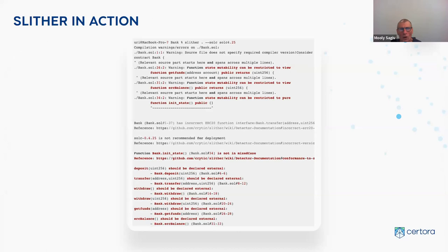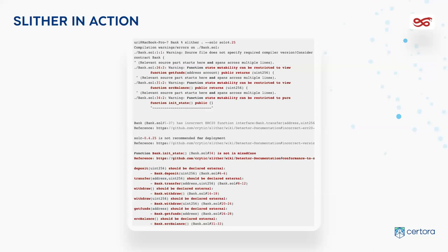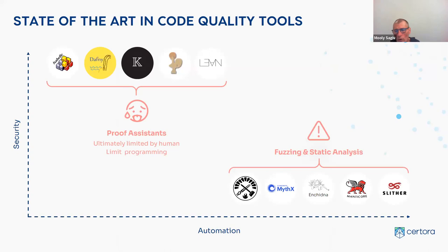To motivate this, here is Slither running on a very small contract called 'bank.' You can see the red lines — those are mistakes that Slither reported. Does anybody want to guess how many of them are real? The answer is: none of them are real. That's exactly the problem — all of them are false positives. That's the kind of issue that limits this type of technology.